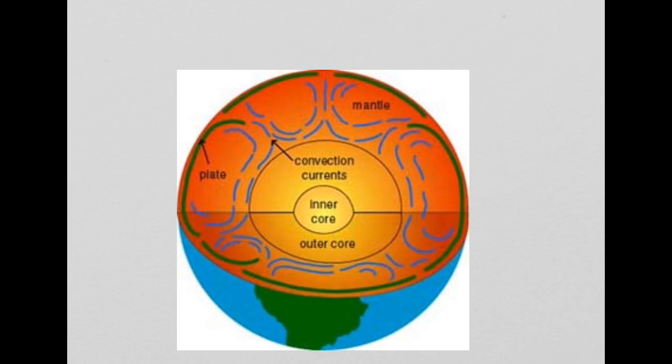This diagram represents convection currents. Convection currents are driven by the heat from the core. The heat from the core causes the mantle next to it to warm up and rise, so it will typically move in this fashion.